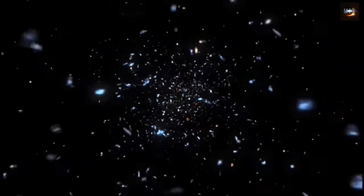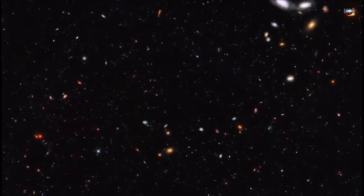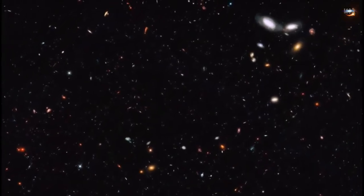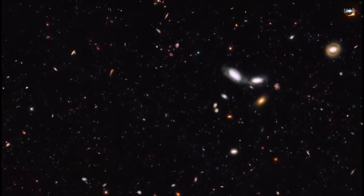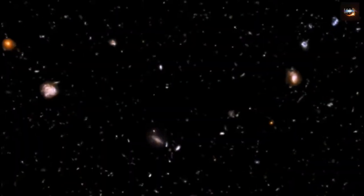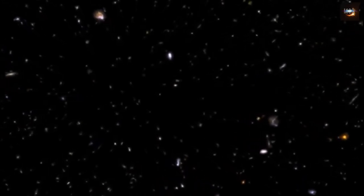There are many possibilities of what dark energy could be. One explanation for dark energy is that it is a property of space. Space has amazing properties, many of which are just beginning to be understood. The first property that Einstein discovered is that it is possible for more space to come into existence.